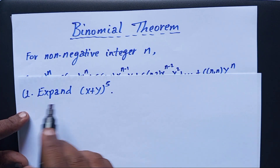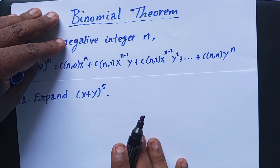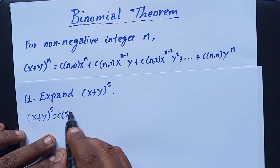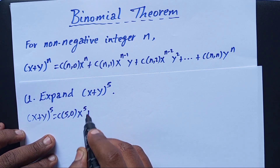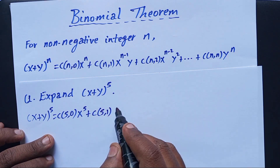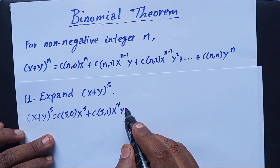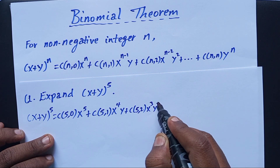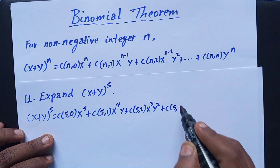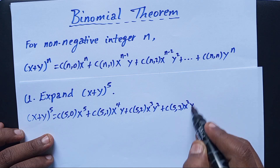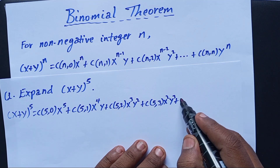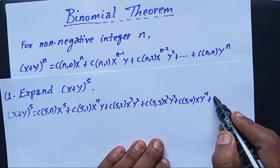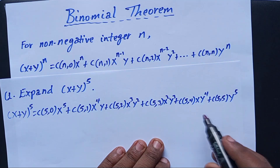For instance, expand x + y raised to 5 using this Binomial Theorem. So x + y raised to 5 equals C(5,0) x^5 + C(5,1) x^4 y + C(5,2) x^3 y^2 + C(5,3) x^2 y^3 + C(5,4) x y^4 + C(5,5) y^5 according to the theorem.